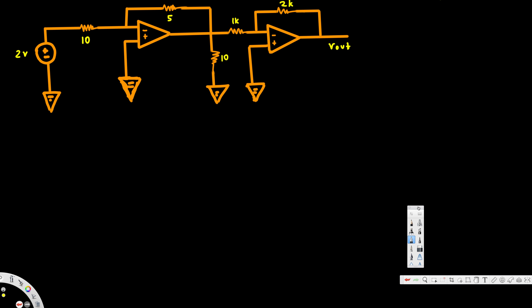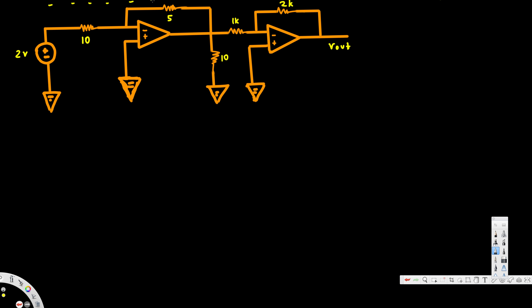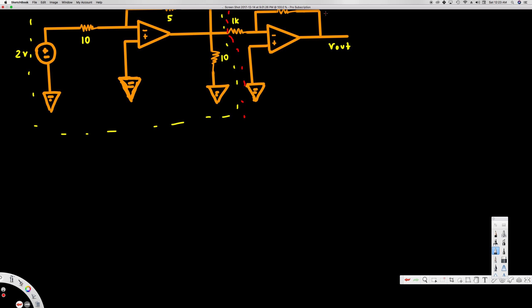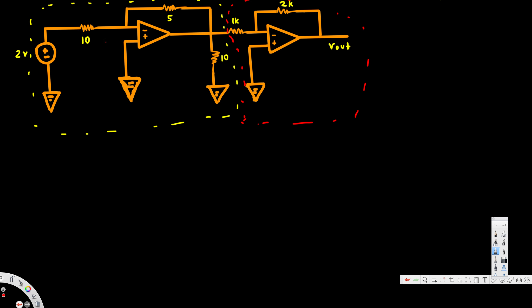In this video we are going to see an example of cascaded op amplifiers. We are trying to find out the Vout voltage. In this kind of problem, we can separate the circuit into two parts — calculate the Vout for the first part, and then calculate the Vout for the second part.